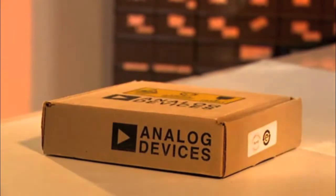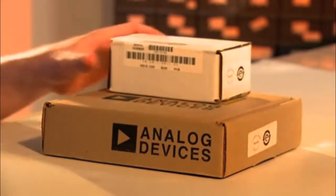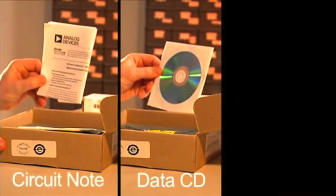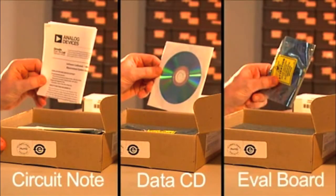Here's the eval board, and here's the controller board. Now, on the inside, we should find a copy of the circuit note, and the CD, and the eval board. Let's get started.